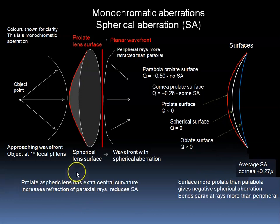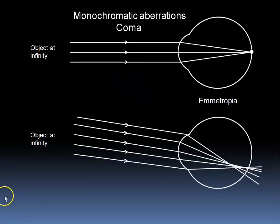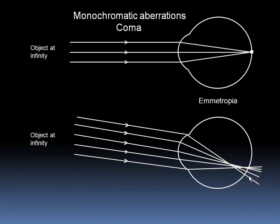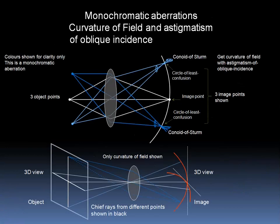Note that the 20-diopter hand-held lens that you use for indirect ophthalmoscopy is an aspheric lens, which has a prolate surface that is more curved in the center than a spherical surface would be, and therefore corrects for spherical aberration. Another aberration is coma, in which off-axis points of light are focused into a comma-shaped blob of light on the image plane. One could say that it is sort of a combination of astigmatism of oblique incidence and spherical aberration. Here we see other monochromatic aberrations: curvature of field and astigmatism of oblique incidence.